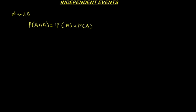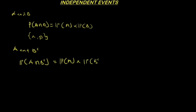If A and B are independent, we say that A and B are independent. Furthermore, A and B complement are independent as well. So in that case, finding the probability of A intersection B complement gives us the probability of A times the probability of B complement, only if the events are independent.